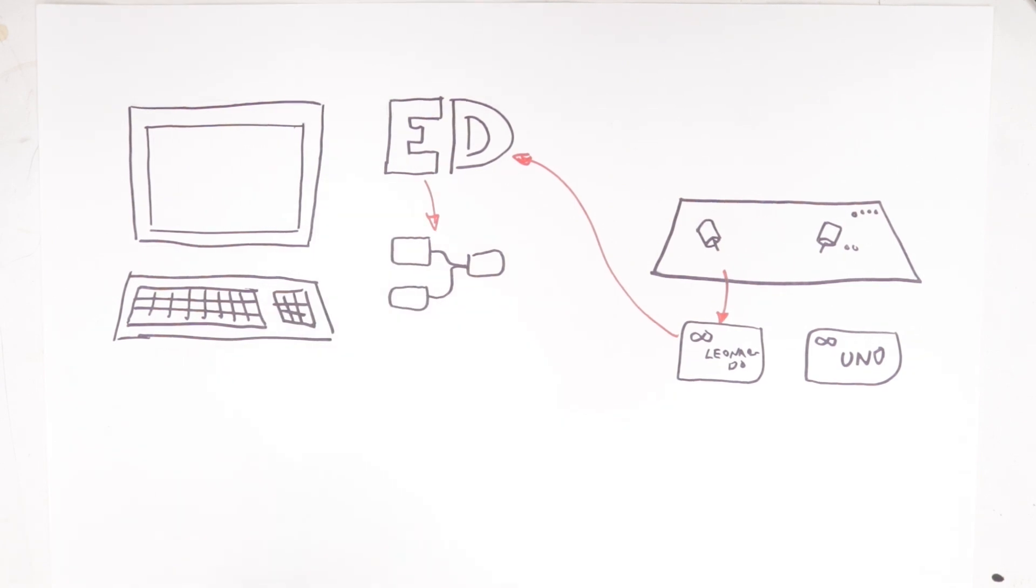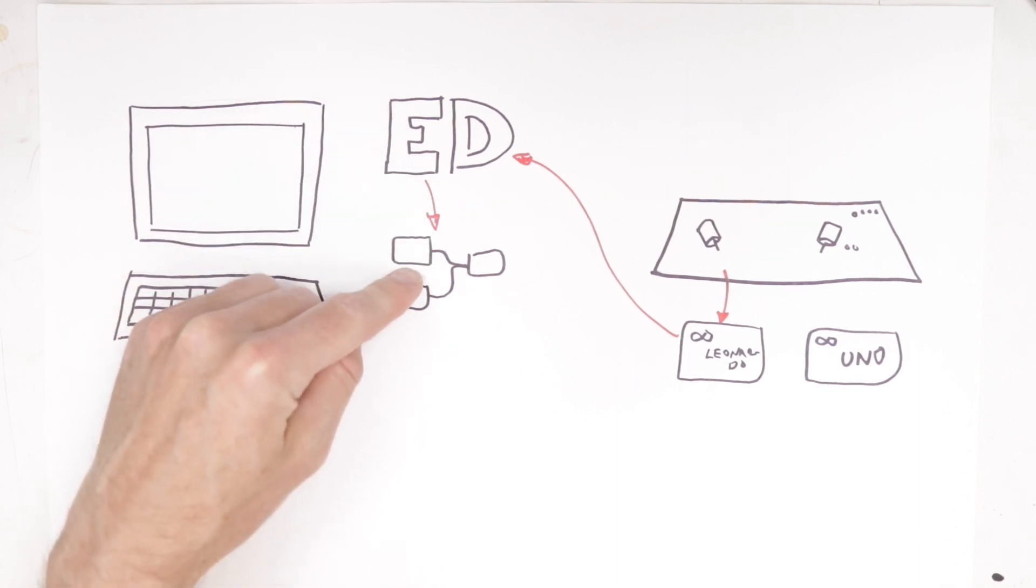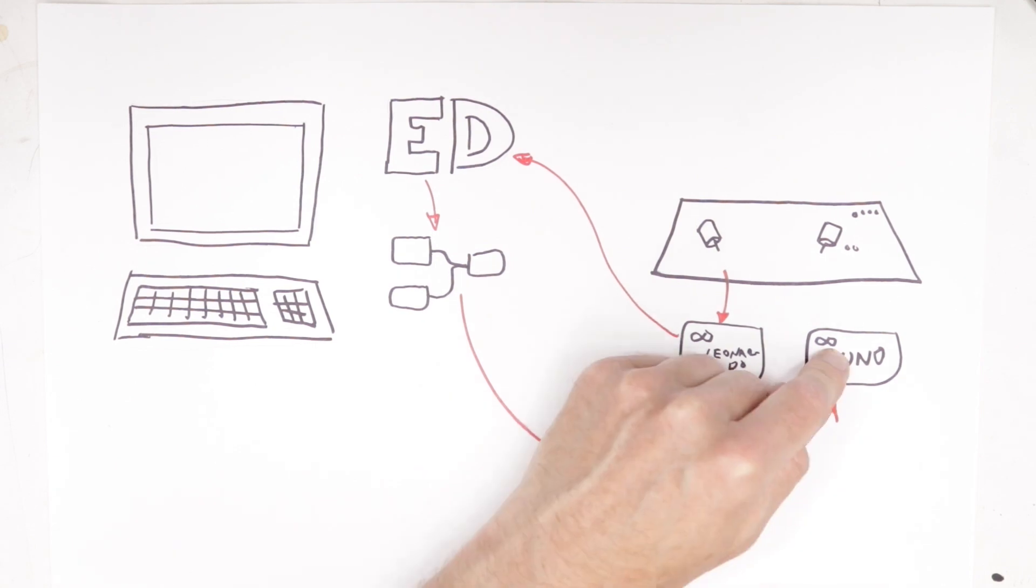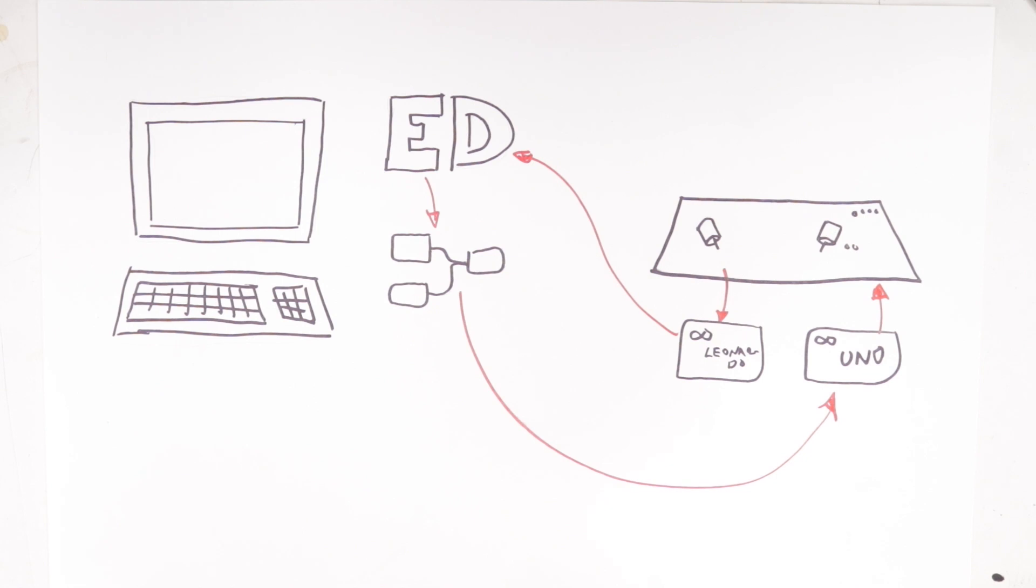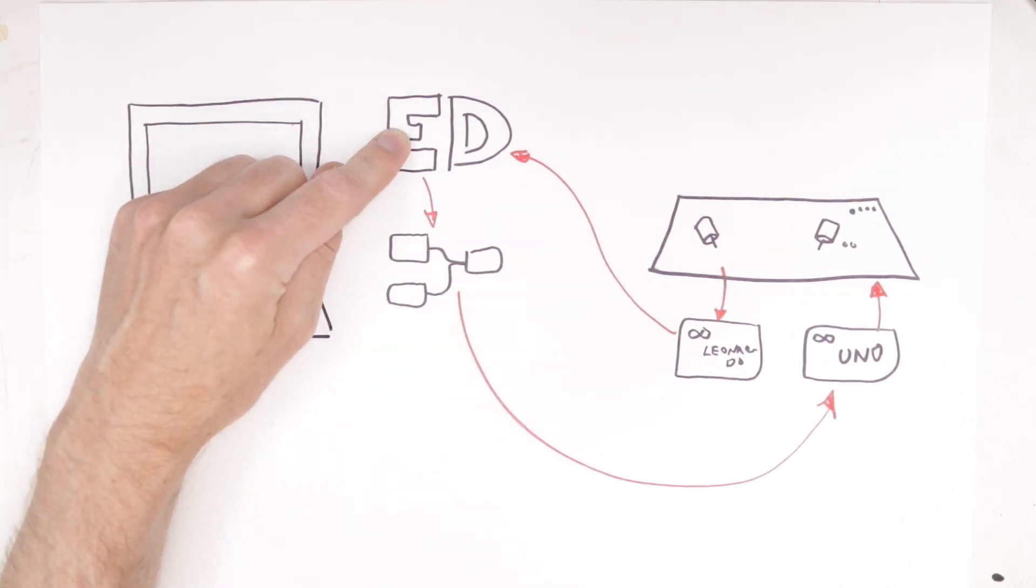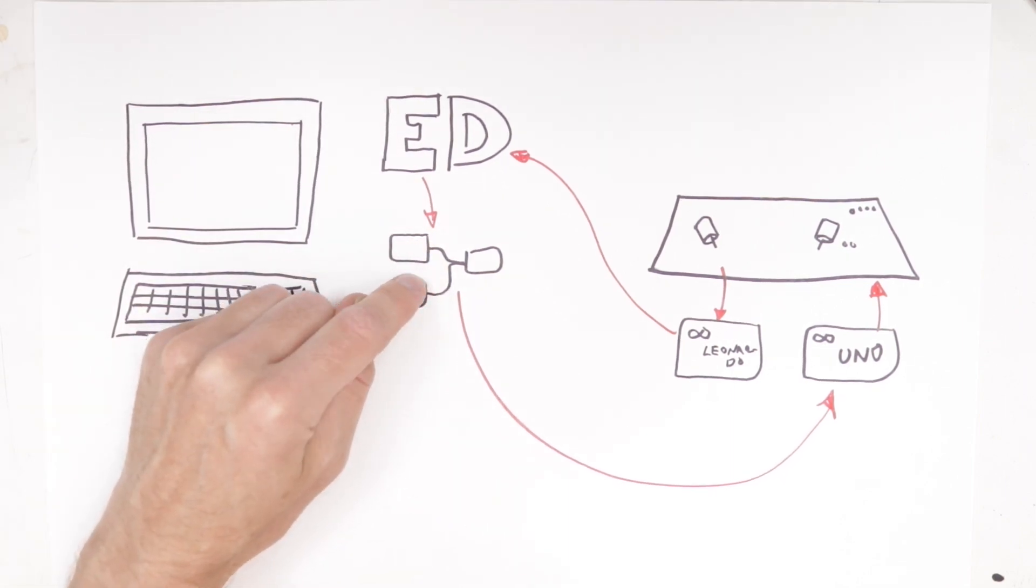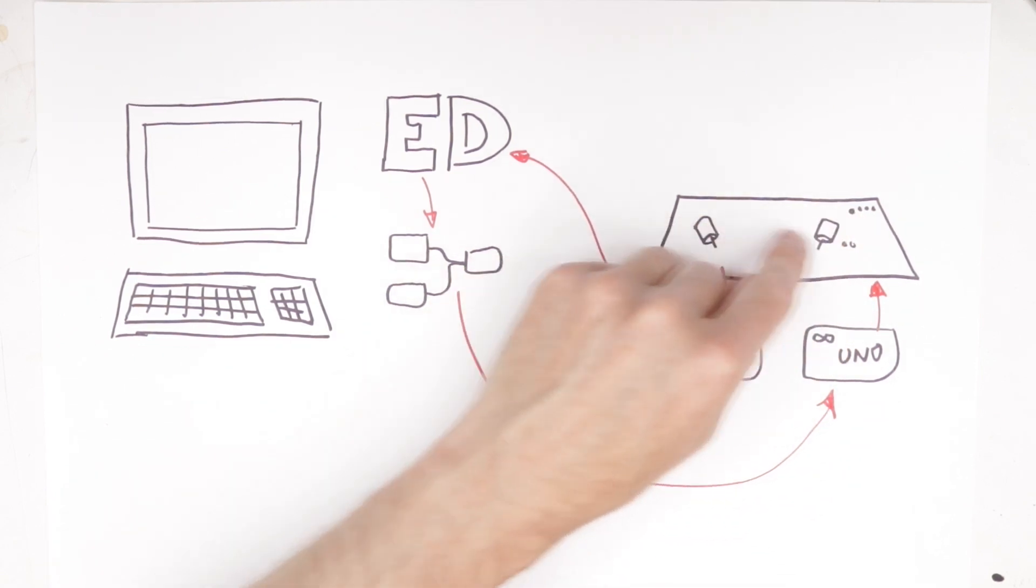But the next step is that since Elite Dangerous can tell when things are happening, and I can read this through my Node-RED server, I can send that information to the other controller, the Arduino Uno. And this controller can update the keyboard, telling it the state of the game. So, for example, if I fold down the landing gear in Elite Dangerous, Elite Dangerous sends a signal, using its journal files, that gets read by Node-RED. Node-RED sends that information over to the Uno, and Uno can switch on a light on the keypad here.